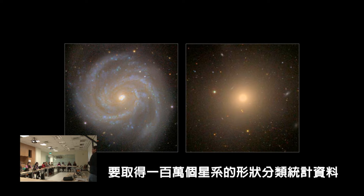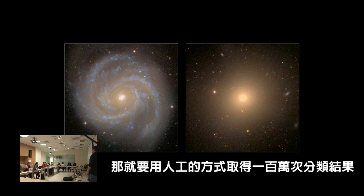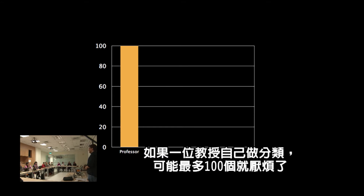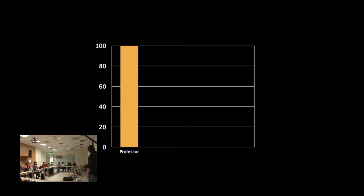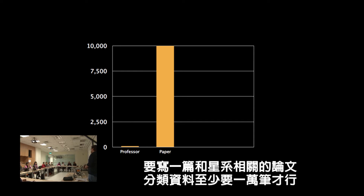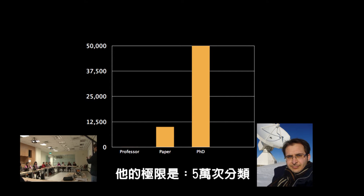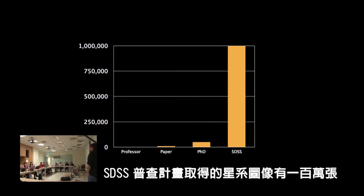So what we need to do to understand this question across all those million galaxies is have people look at every single image. A million galaxies — ask a person to look at each image — and that's the problem. If you ask a professional scientist like Meg, she'll probably do about a hundred and then get bored. To publish a scientific paper meaningfully about the universe, maybe about 10,000 galaxies at most. We asked Kevin, our PhD student, to look at these galaxies and he looked at about 50,000 before saying no more. But we have a million galaxies to look at, so how do you go about asking people to do a million galaxies?